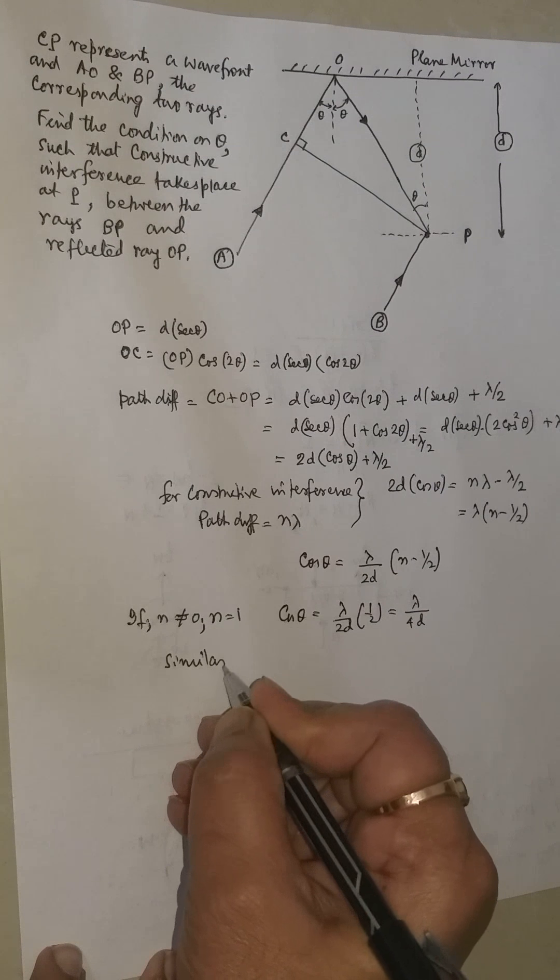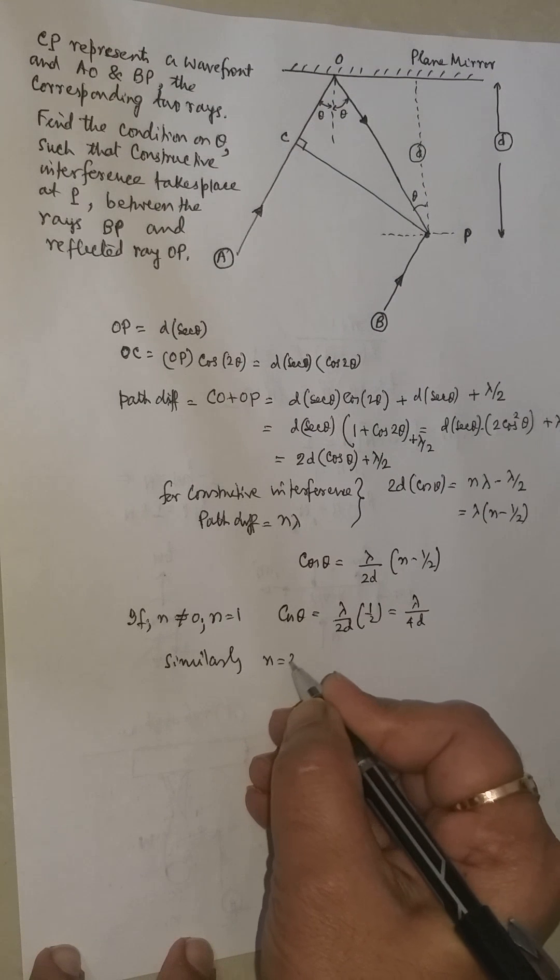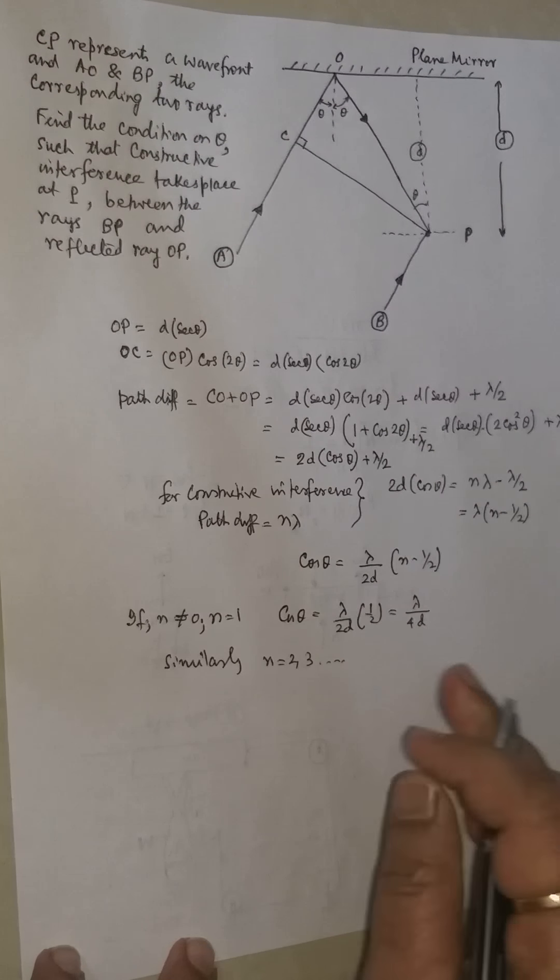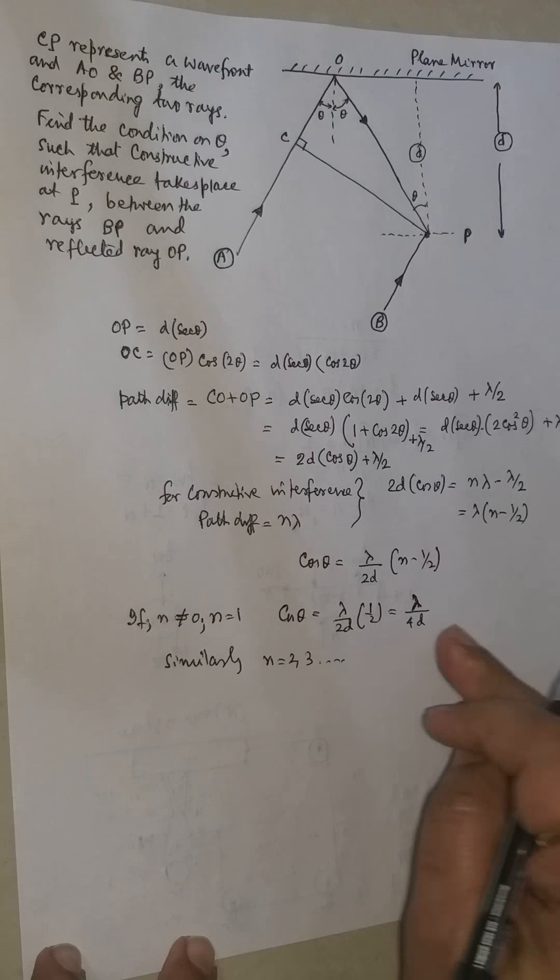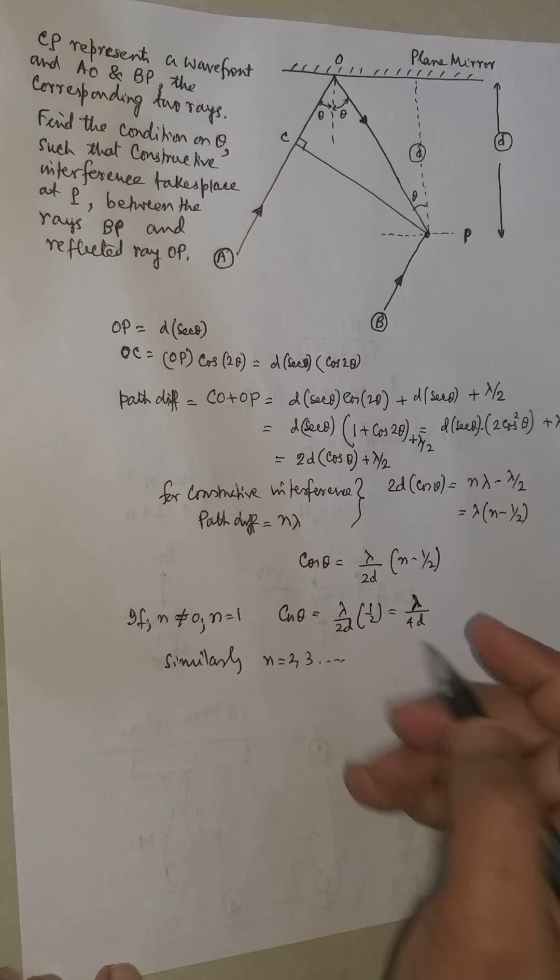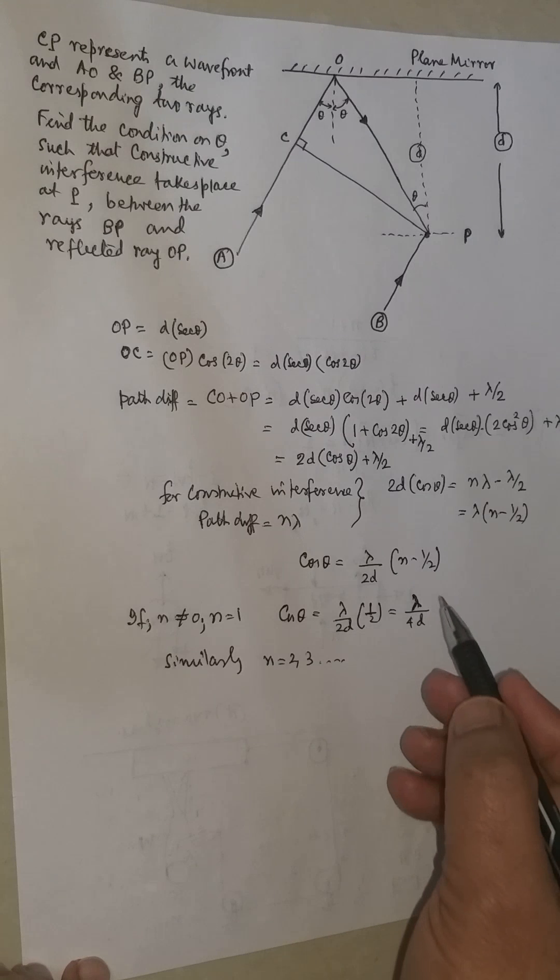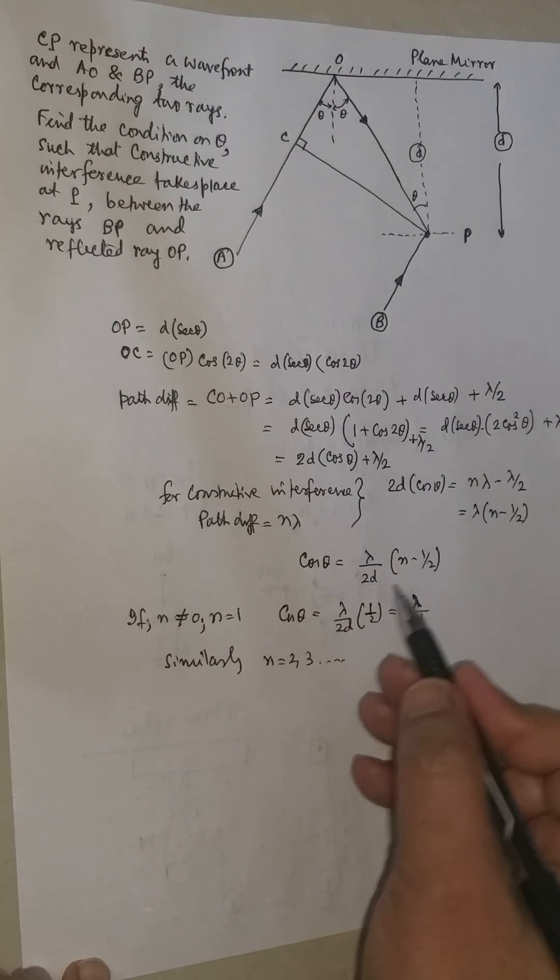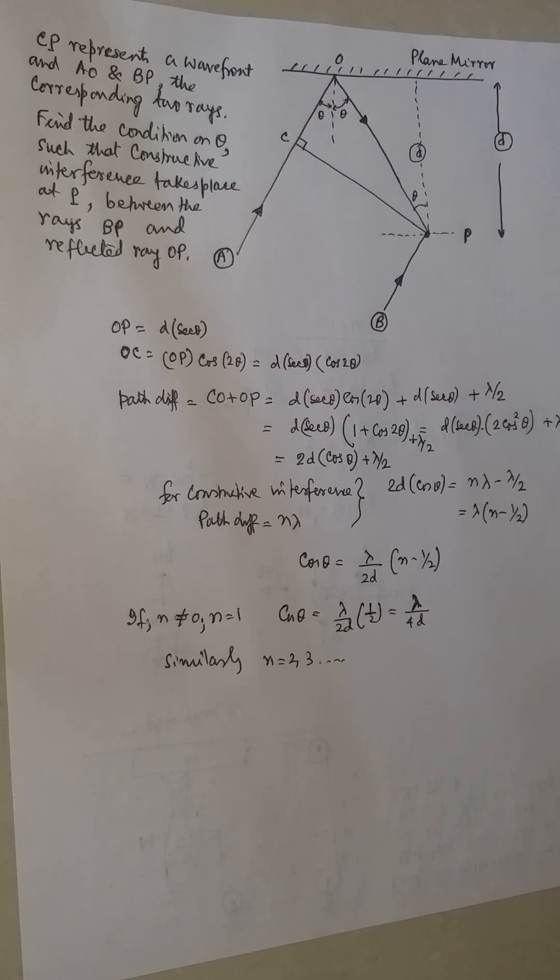Similarly, the other options are N can be 2, 3, etc. But if it is an objective question with multiple choice, we need to check the values which will be most appropriate for the answer. So as of now, cos theta is this, but N cannot be 0. That is the solution.